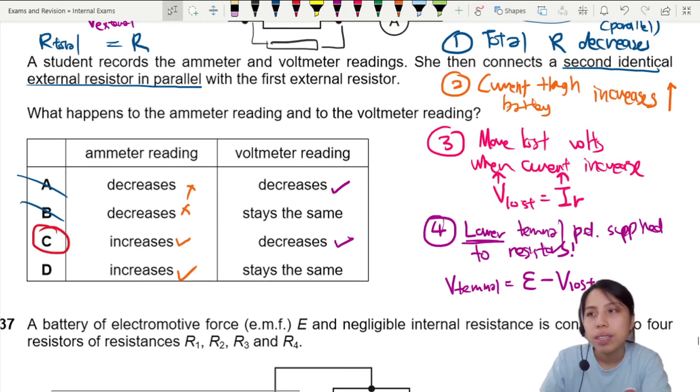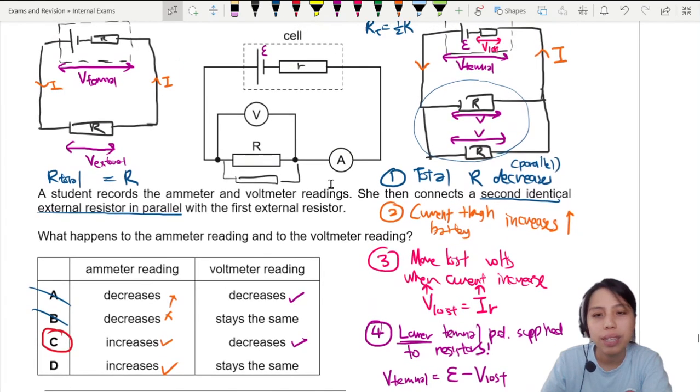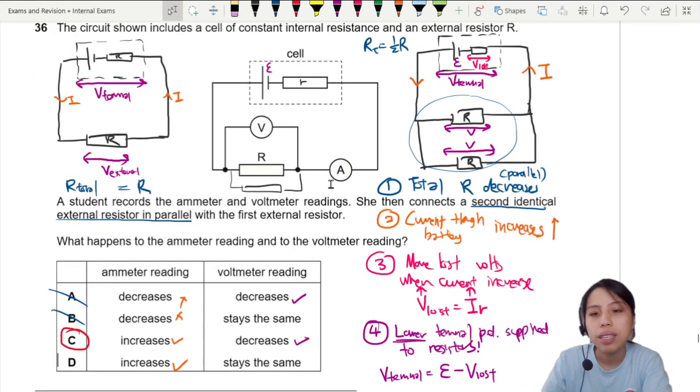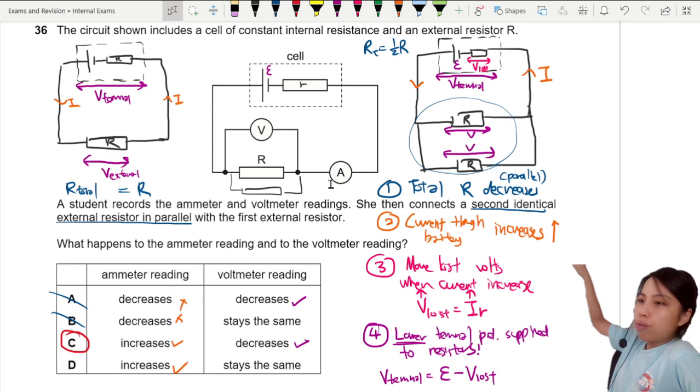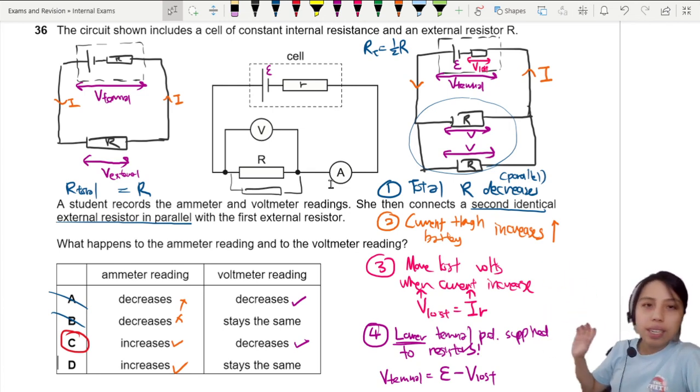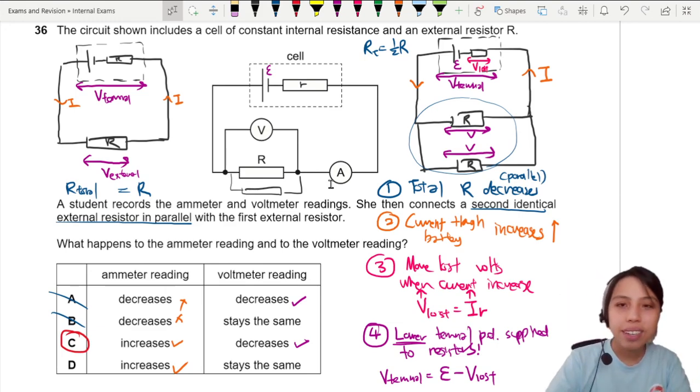So this whole flow of thought, of what happens when you change something in a circuit, is actually quite a popular thing that Cambridge likes to ask, especially in structured questions. They'll ask you to state and explain the changes that happen when you add a bulb, when you take away a resistor, when something breaks. So if you can flow through this flow of thought from total resistance to current to lost voltage and then to terminal PD, and you internalize and really understand it, it'll be very valuable for you. So that's this circuit question.